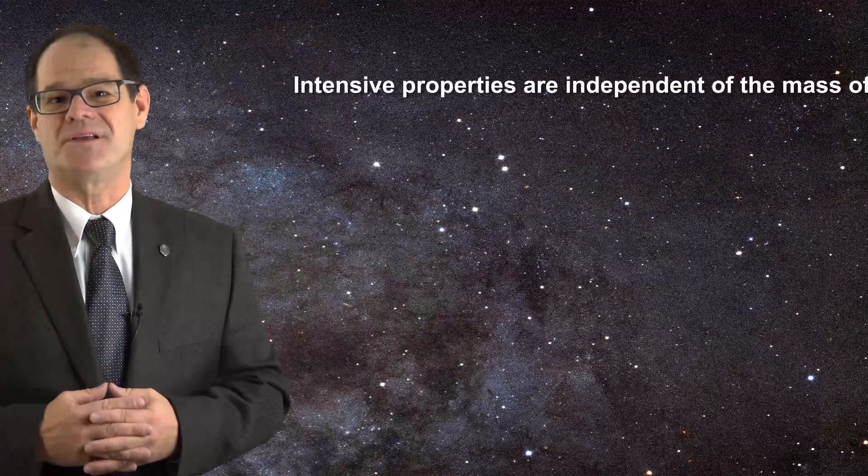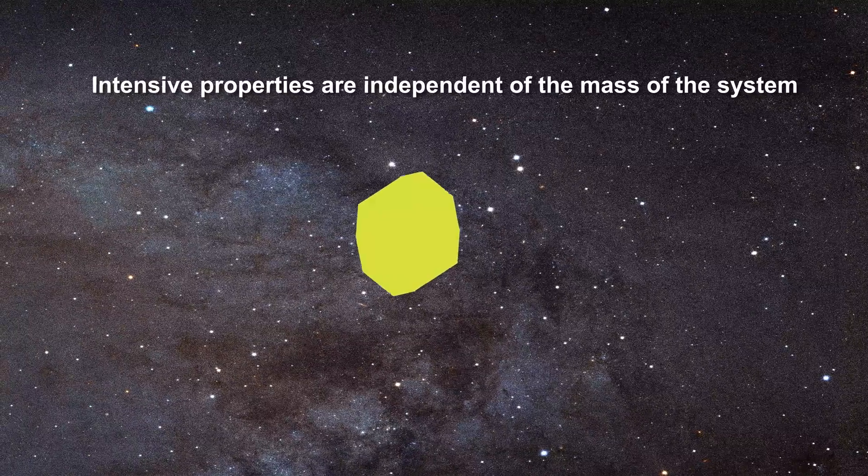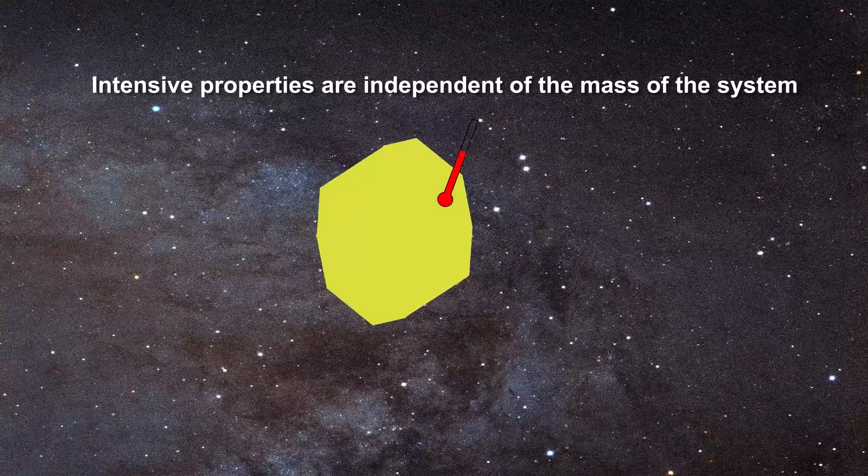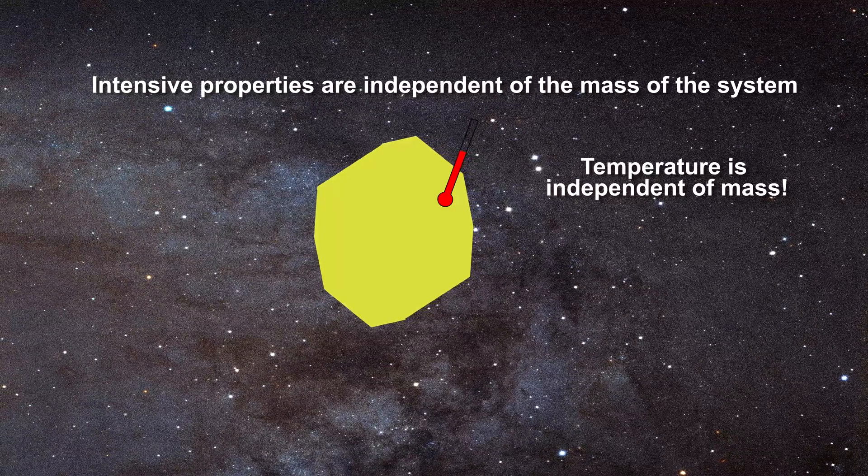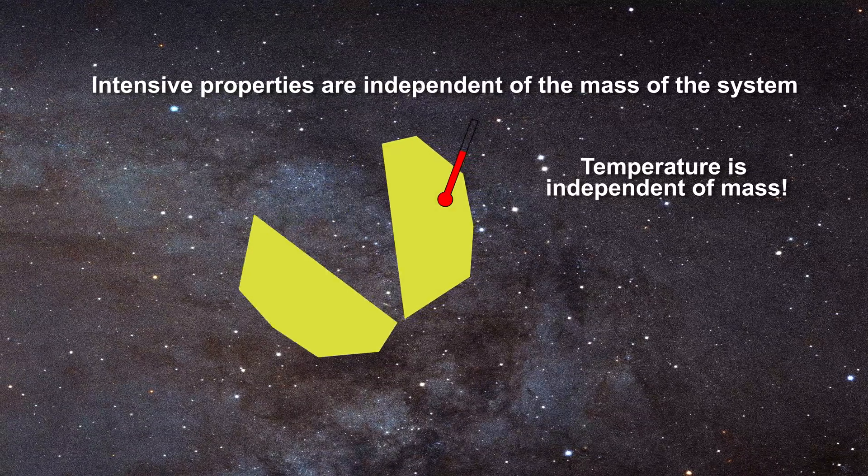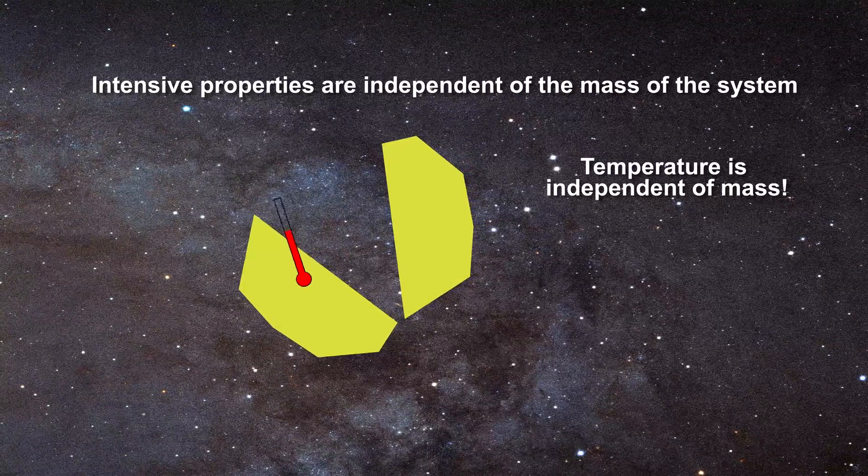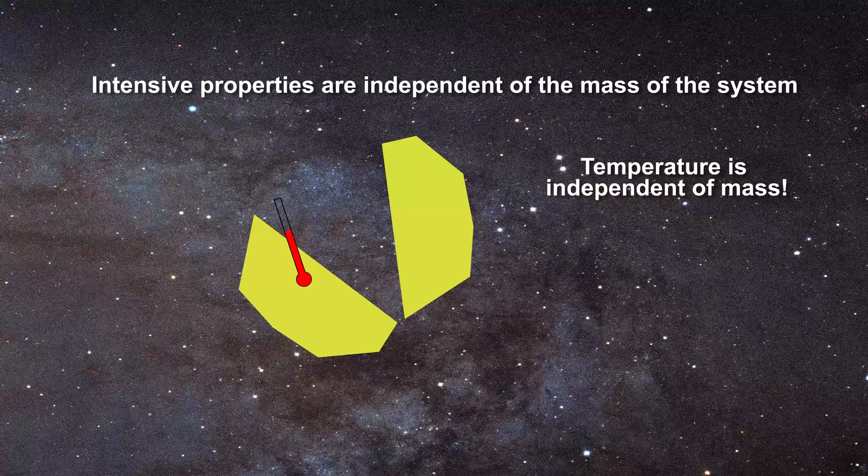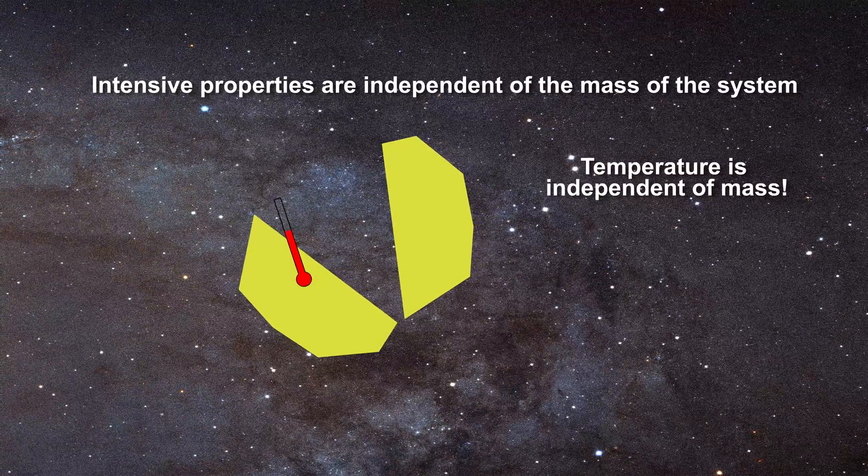intensive properties are independent of the mass of the system. It does not matter how much of a substance we have when we define temperature. If we take an object at a given temperature and divide it in two, each of the new objects will still have the same temperature. As such, an intensive property is one which has the same value throughout a substance.